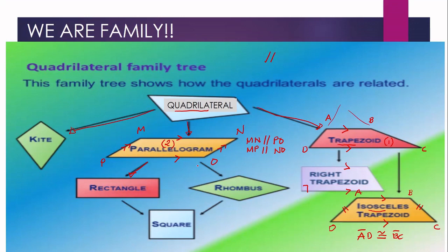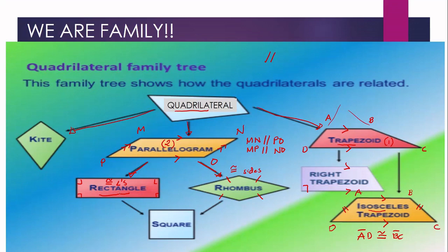Under the parallelogram, we have the rectangle and the rhombus. A rectangle is a parallelogram with congruent angles — all angles are right angles measuring 90 degrees. A rhombus, on the other hand, is a parallelogram with congruent sides. So if a parallelogram has congruent angles, it is a rectangle; if it has congruent sides, it is a rhombus.